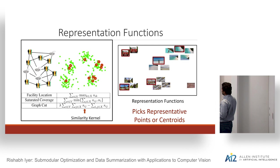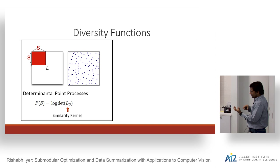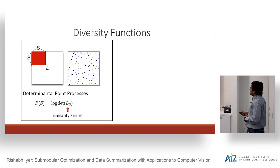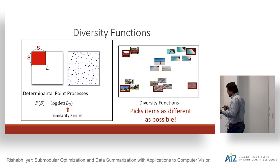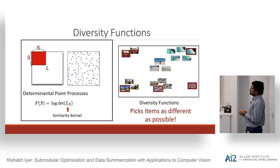The diversity functions are in contrast to representation functions. Representation functions try to find representatives for every element in the ground set, wanting a set X that can represent every element. Diversity functions don't care about the ground set — they just care that the chosen elements are as diverse as possible among themselves. DPPs (determinantal point processes) are very natural models for diversity. Because they don't look at the entire ground set, diversity functions can often pick outliers.